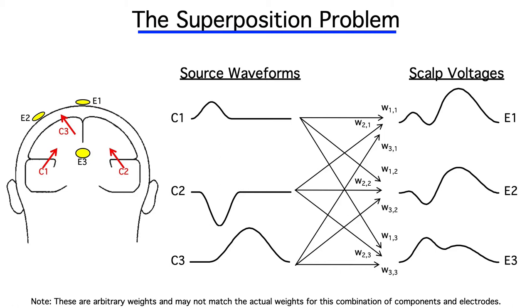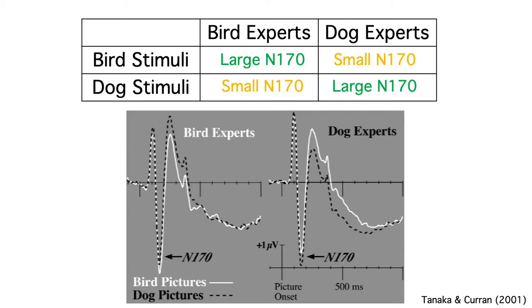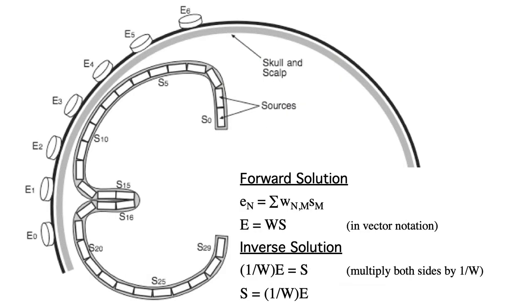There are two general classes of solutions to the superposition problem. The first is to combine clever experimental designs with simple but thoughtful analyses of the data. The second is to try to mathematically estimate the locations and source waveforms of the underlying components.